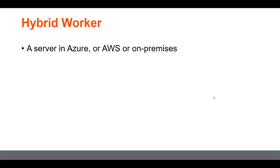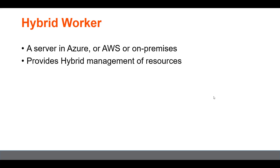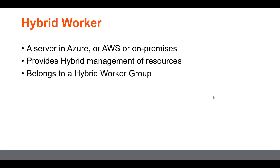A hybrid worker is a server which exists in Azure, AWS, or on-premises — it could be a VM or a physical server. This hybrid worker provides hybrid management of resources. You can manage resources in Azure out-of-the-box, and with a hybrid worker you can also manage resources in AWS, on-premises, or in a different subscription.